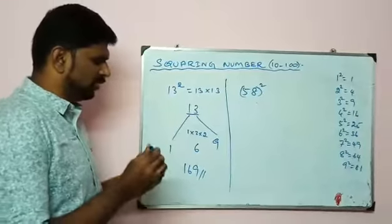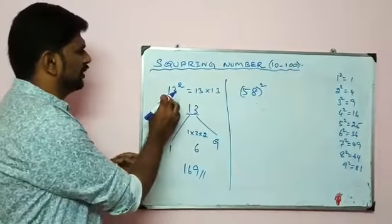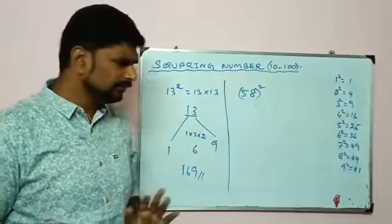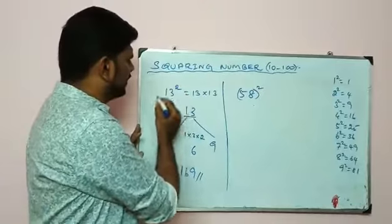First, I'll take an example: 13 square. 13 square means 13 into 13. First, we have to write the number 13.